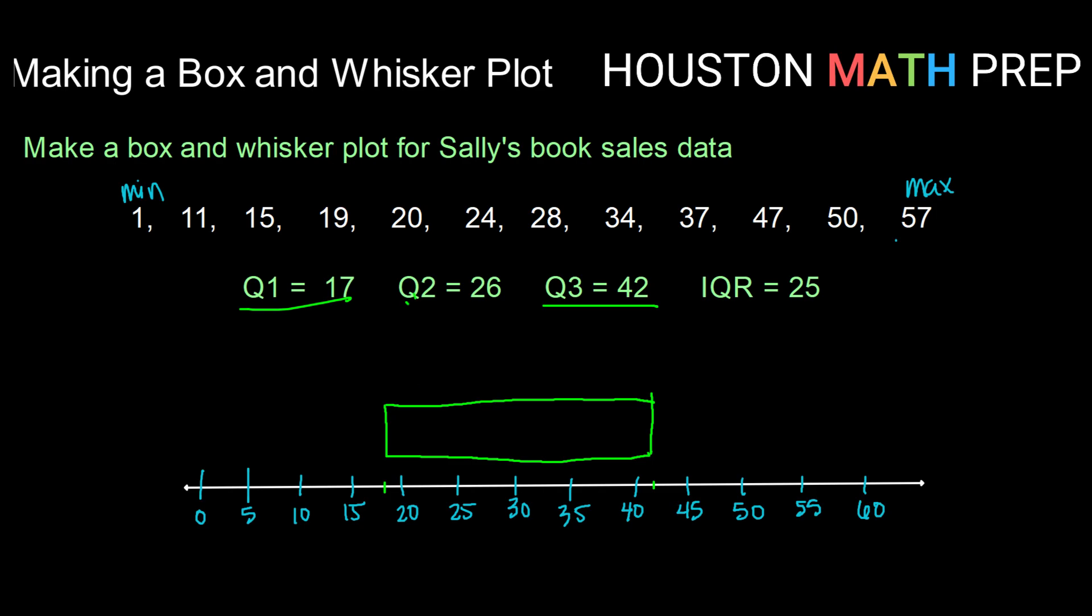The next piece I'm going to add is my line through that box at my Q2 or my median. So 26 is about right here. So I'm going to draw my line through at my median. Alright, that completes the box.